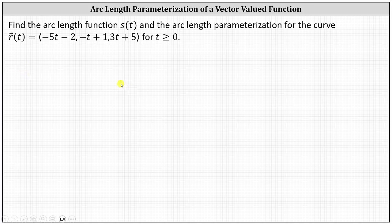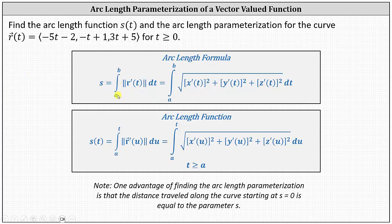Recall for arc length, we have S equals the integral from A to B of the magnitude of R prime of t dt, and the result is a numerical value. However, for the arc length function, we have S of t equals the integral from A to t — not A to B — of the magnitude of R prime of u, not R prime of t, and then du.